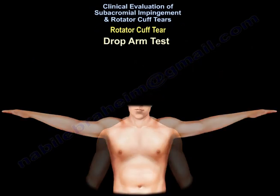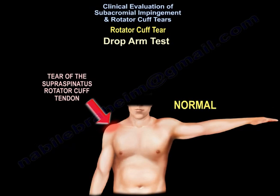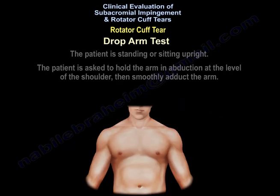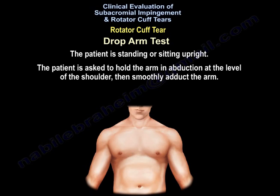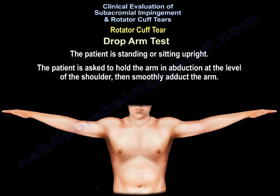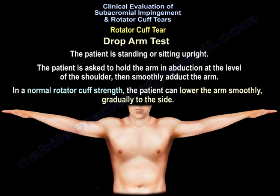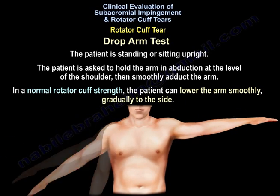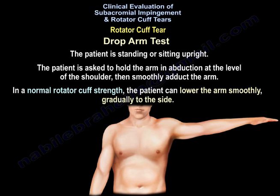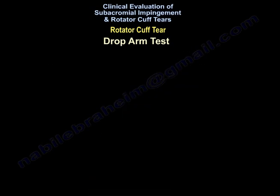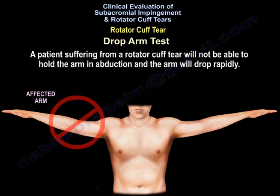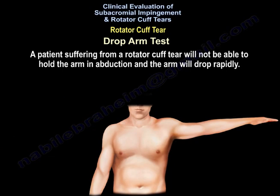Drop Arm Test: The patient is standing or sitting upright. The patient is asked to hold the arm in abduction at the level of the shoulder, then smoothly adduct the arm. In a normal rotator cuff, the patient can lower the arm smoothly and gradually to the side. A patient suffering from a rotator cuff tear will not be able to hold the arm in abduction, and the arm will drop rapidly.